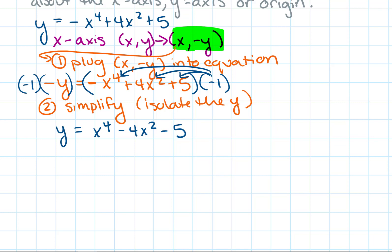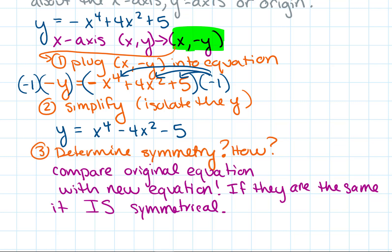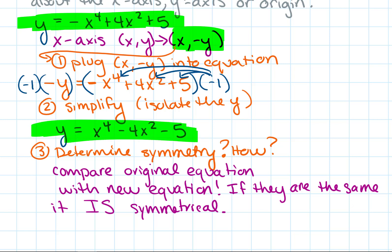After distributing the negative one to each term, our new equation is y equals x to the fourth minus 4x squared minus 5. Now we compare this to the original equation: y equals negative x to the fourth plus 4x squared plus 5. They are not the same — the signs are opposite — so this equation is not symmetrical about the x-axis.